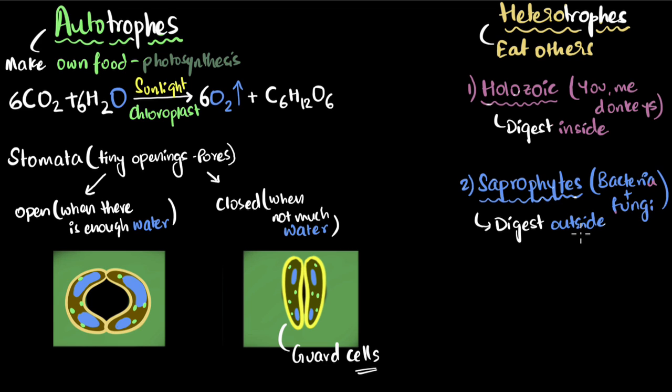How do they digest the food outside? Well, they spit some chemicals on the food, which actually breaks them down, and that starts digestion. And that's what causes rotting. All the rotting is basically saprophytes trying to spit chemicals and digesting the food outside. Sapro basically means rotting.